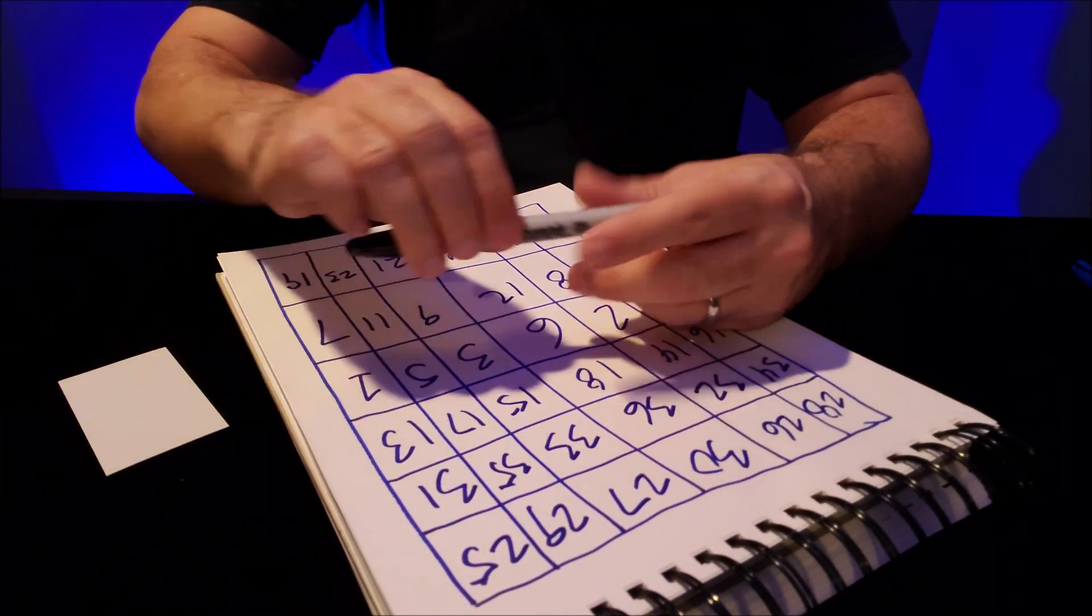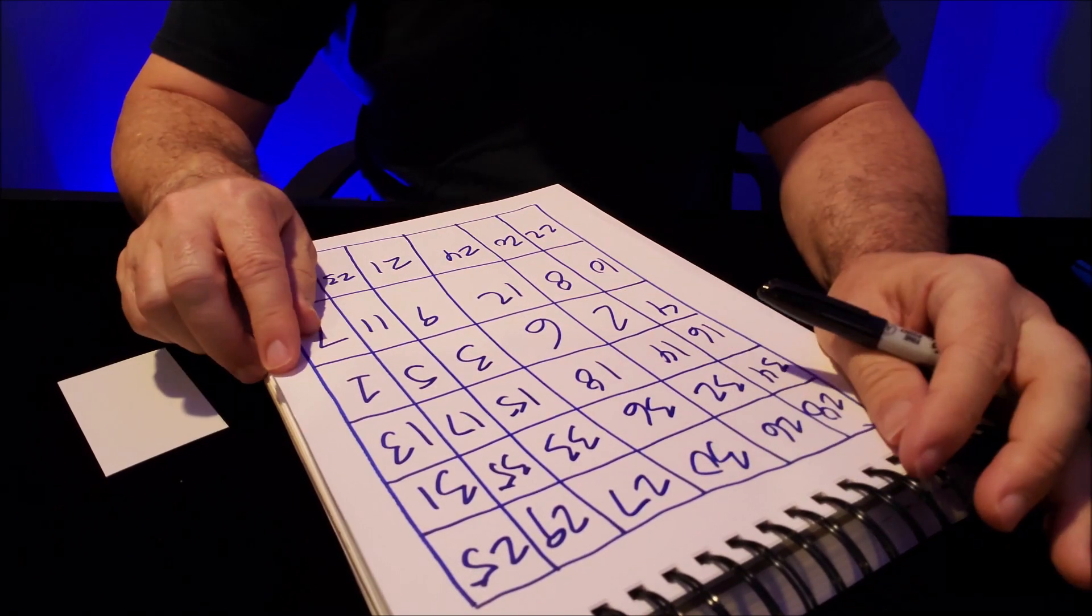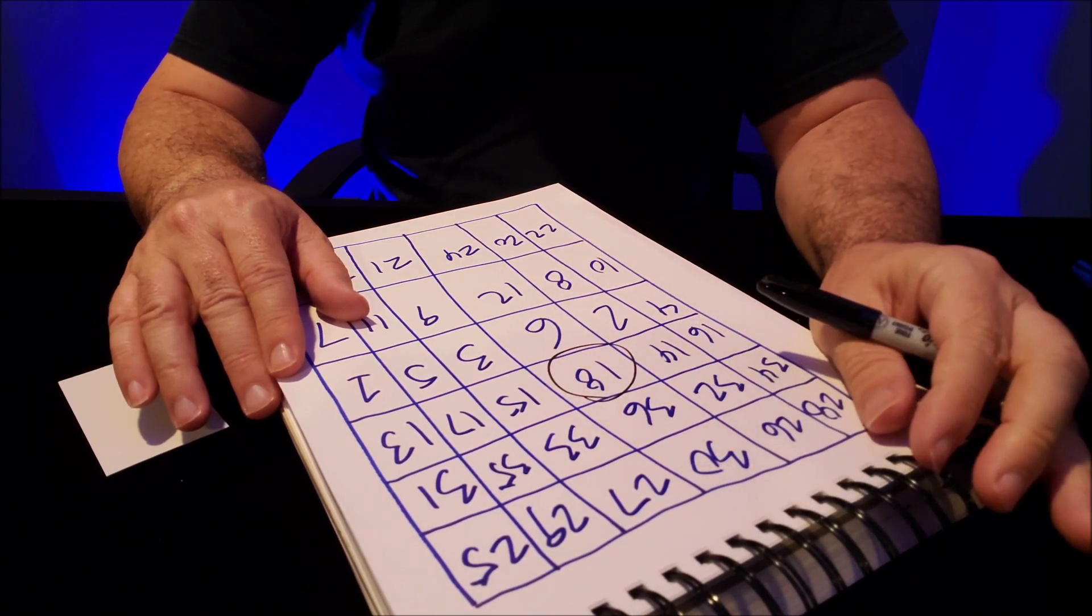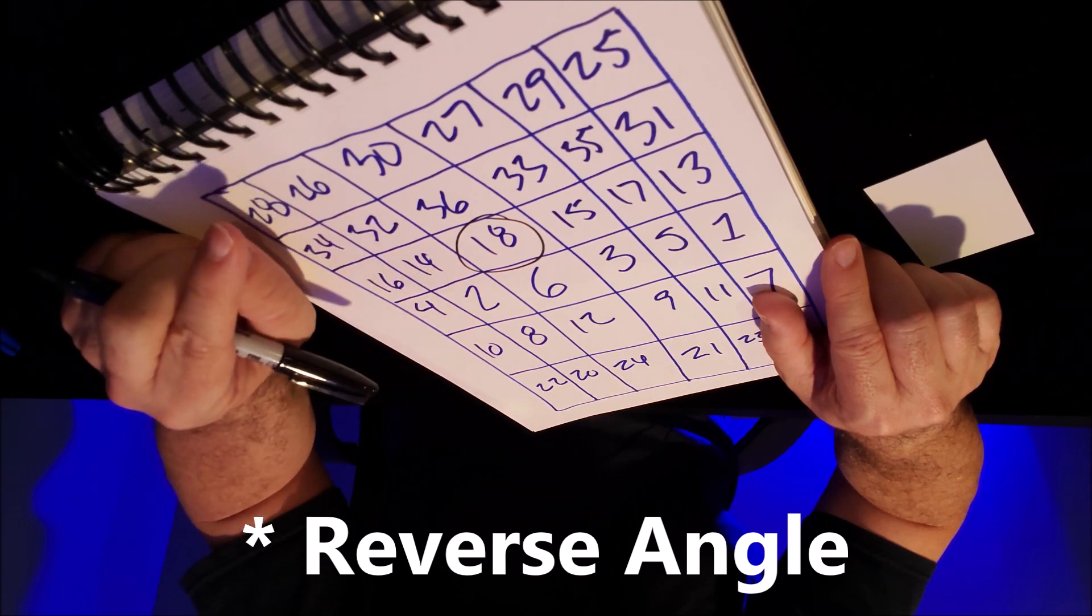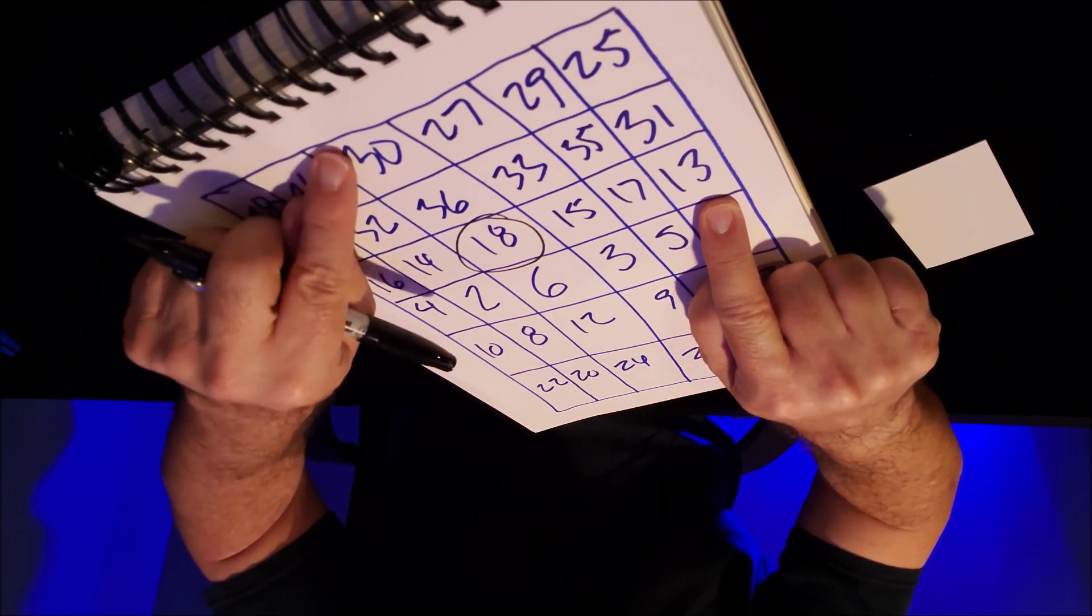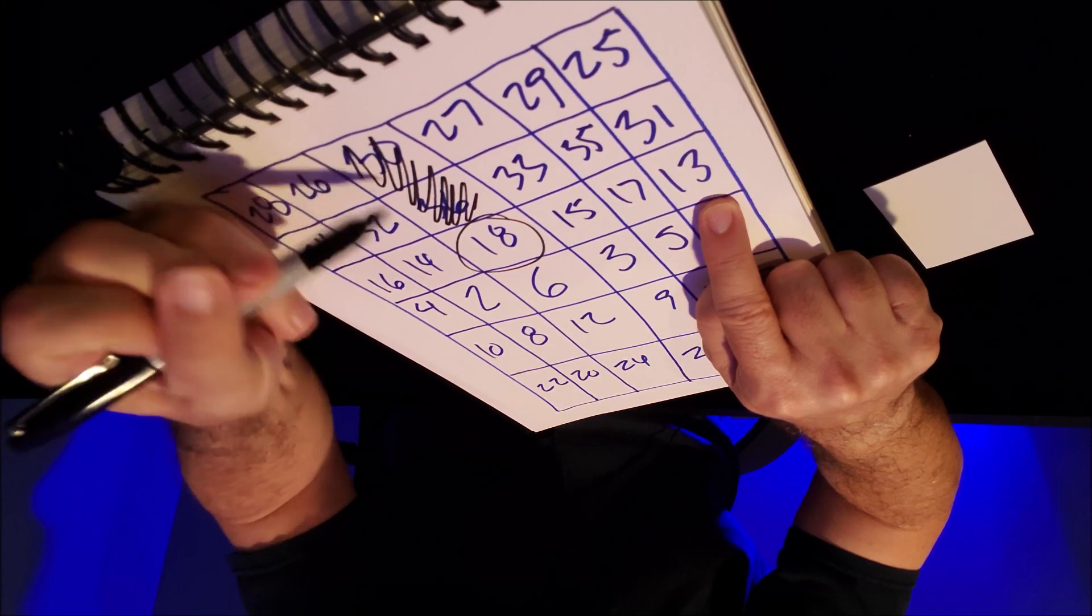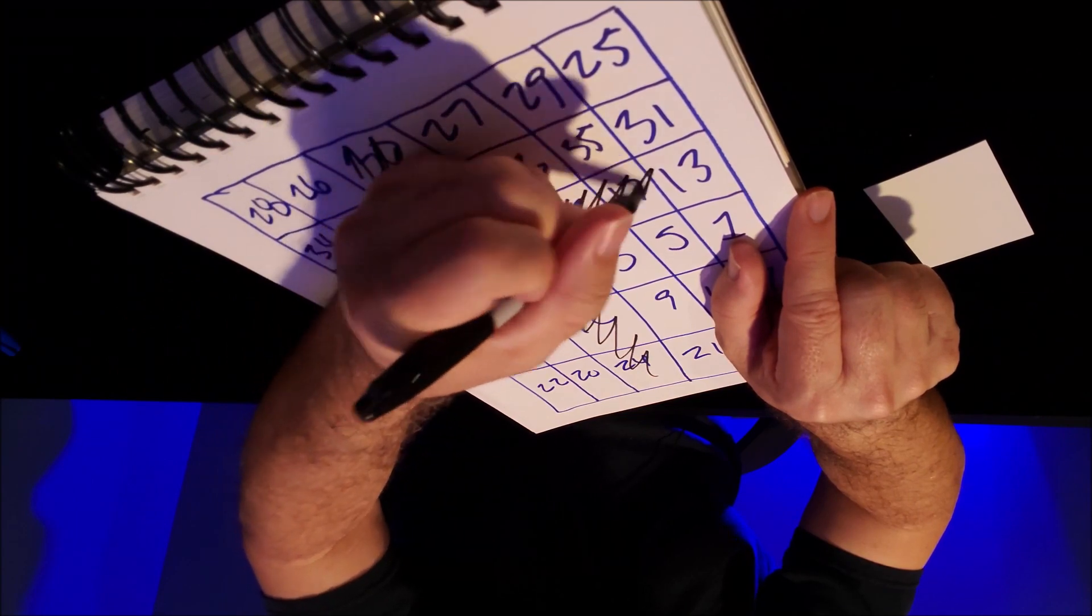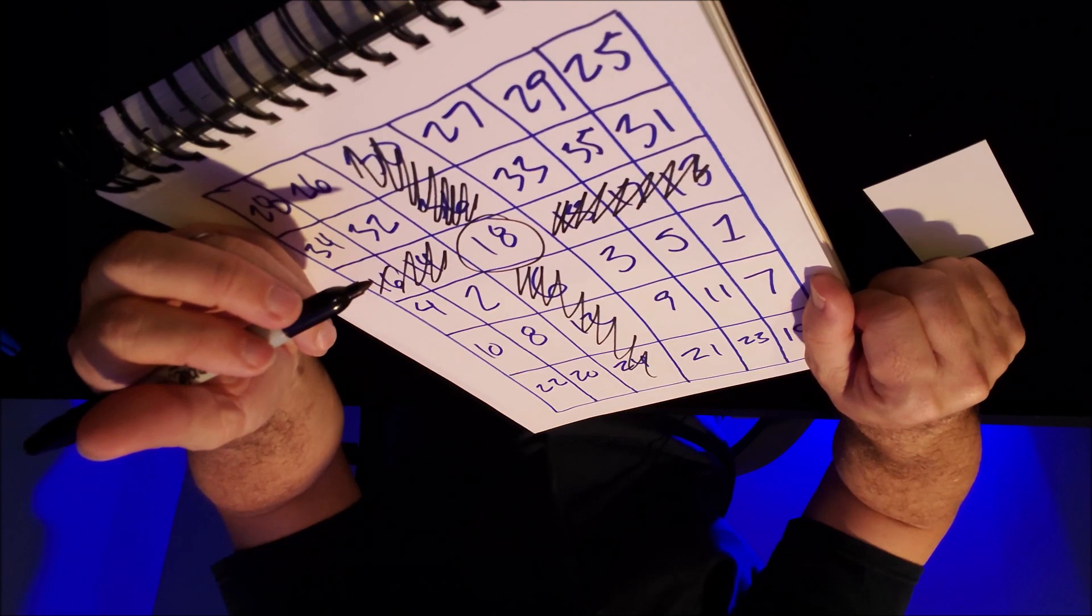You're going to come out with your prediction card and say I made a prediction. You're going to come out with this sheet and give your spectator a pen. You're going to tell them that they can circle any number they want. They can circle any number they want. Let's say they circle 18. Then here's what they're going to do: they're going to circle their number.